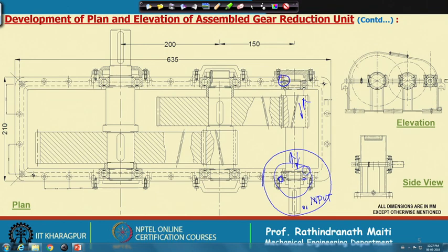These two covers — the sealed cover and the blind cover — will have different dimensions and different features. So they are separate components, and while numbering the parts, these two will have separate part numbers.